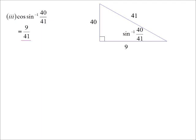I can just draw up a triangle. If I just label one of those angles, the inverse sine of 40 on 41 is an angle, so I'll say it's that one. Well, if the inverse sine is 40 on 41, it's telling me the sine of that angle is 40 on 41. A bit of Pythagoras, I can work out the third side. The cosine of that angle is 9 on 41.